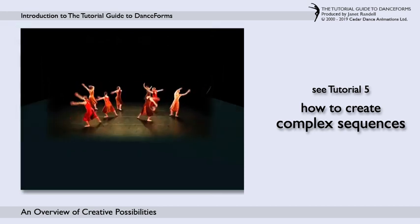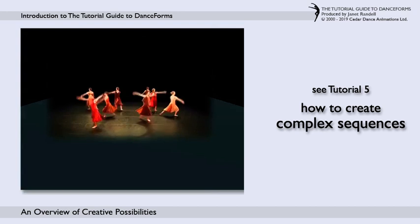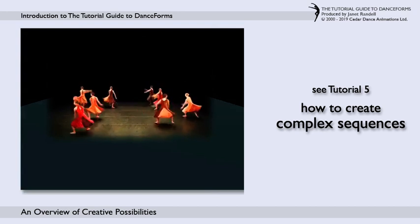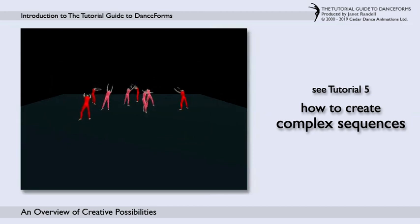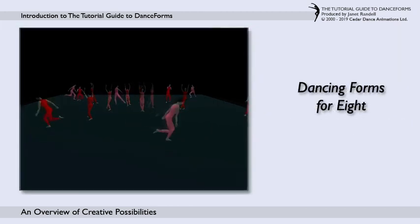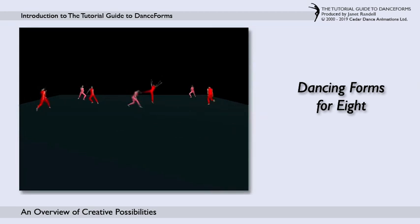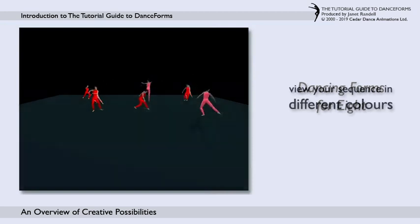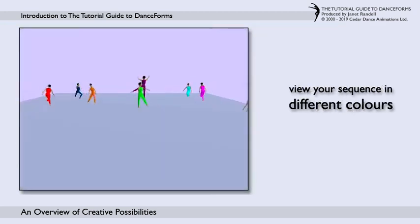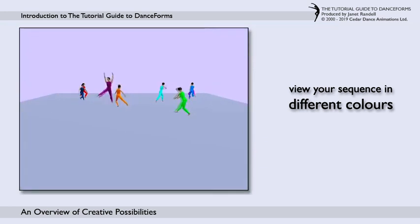Here, for example, is an extract from Dancing Forms for Eight to music by Pachelbel, which has been choreographed and created in DanceForms and is featured as a learning study in Tutorial Five. This is another extract from the same dance without music, with black background and coloured figures. You can see how your sequence looks in a different colour.